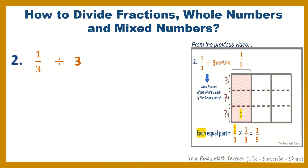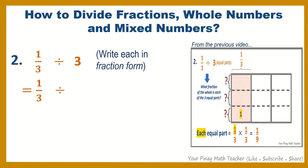Number 2: 1 third divided by 3. Again, write each in fraction form. So we have 1 third divided by 3 over 1. Then do the 3 steps: copy, change, flip.